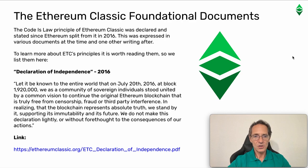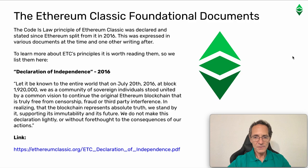Ethereum Classic foundational documents. The Code is Law principle of Ethereum Classic was declared since Ethereum split from it in 2016, expressed in various documents at the time and one other writing after. The Declaration of Independence of 2016 states: 'Let it be known to the entire world that on July 20th of 2016, at block 1,920,000, we as a community of sovereign individuals stood united by a common vision to continue the original Ethereum blockchain that is truly free from censorship, fraud or third-party interference. In realizing that the blockchain represents absolute truth, we stand by it, supporting its immutability and its future. We do not make this declaration lightly or without forethought to the consequences of our actions.'